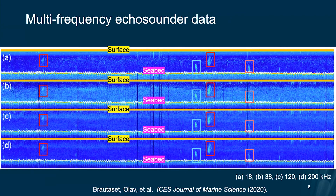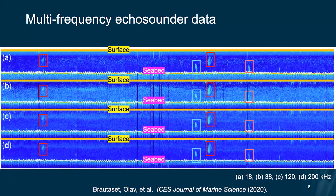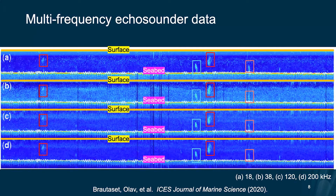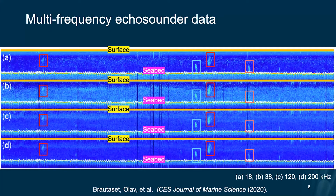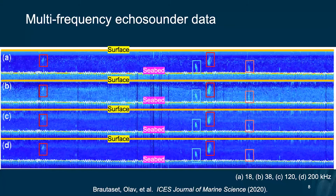When we collect data using multi-frequency channels, we get ecosounder data as shown in the figure. There are four rows of ecosounder data — A, B, C, and D. A shows the ecosounder data collected in the 18 kHz channel, B in 38 kHz, C in 120 kHz, and D in 200 kHz. You can find the same pattern in the same location across all frequency channels, and what we want to do is to classify that.